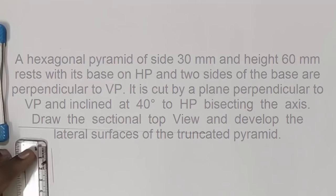We have to start from an edge perpendicular to VP having length 30 mm and draw the hexagon by having an included angle of 120 degrees.